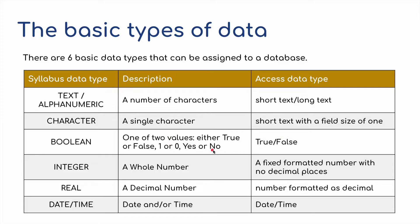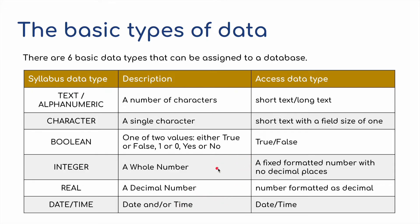Usually yes or no. Integer is a whole number — a fixed formatted number with no decimal places — whereas a real is an actual decimal number with decimal places. And then, of course, date and time is obvious. It's the date, depending on where you are in the world: day/month/year or month/day/year, and of course a time which would be either 12 or 24-hour clock.